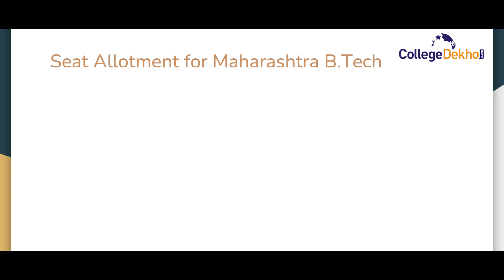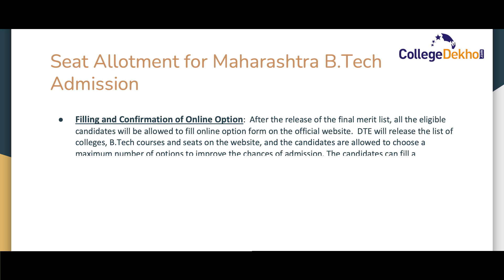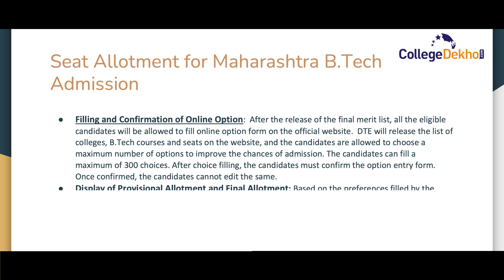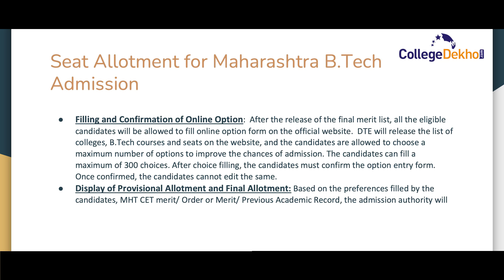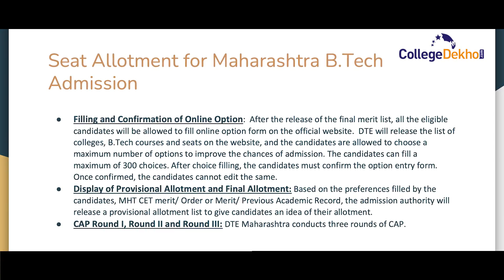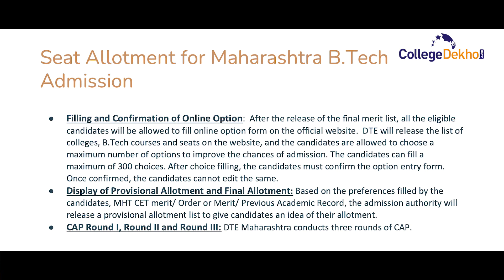The seat allotment process for Maharashtra B.Tech admission: the first step is the filling and confirmation of the online option form. After the release of the final merit list, all eligible candidates will be allowed to fill the online option form on the official website. DTE will release the list of colleges, B.Tech courses, and available seats. Candidates will be allowed to choose a maximum of 300 options to improve their chances of admission. Once confirmed, the option entry form cannot be edited. Based on the preferences filled, MHT-CET merit order, and previous academic record, the admission authority will release a provisional allotment list.